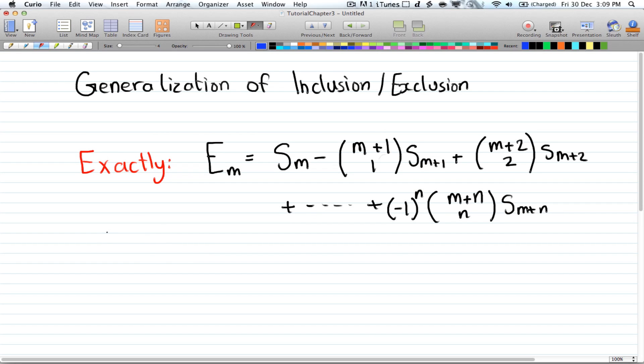Alright, so let's take an example where m equals 2 and let's set our limit to 4, so n is 4. So we want exactly 2.